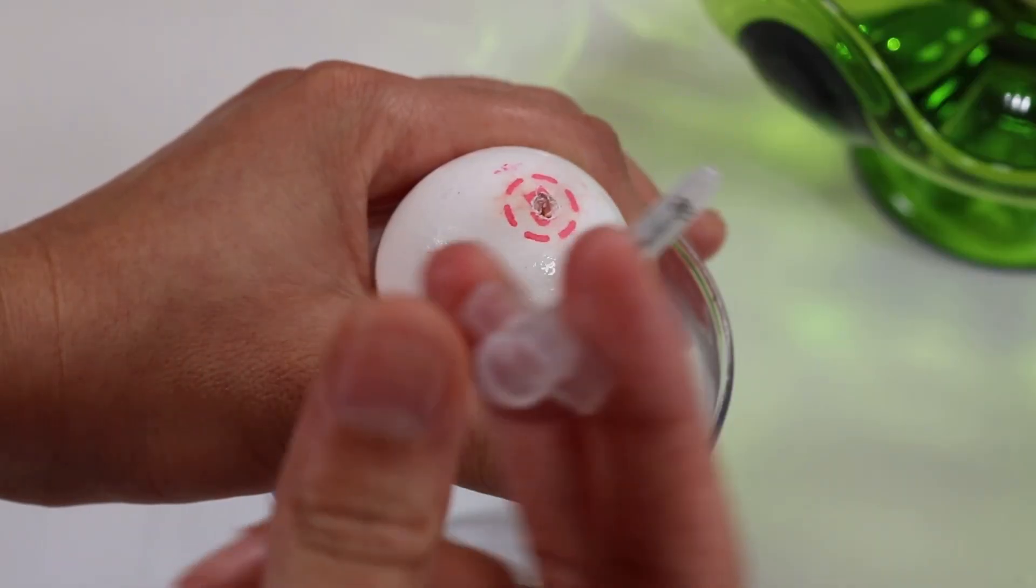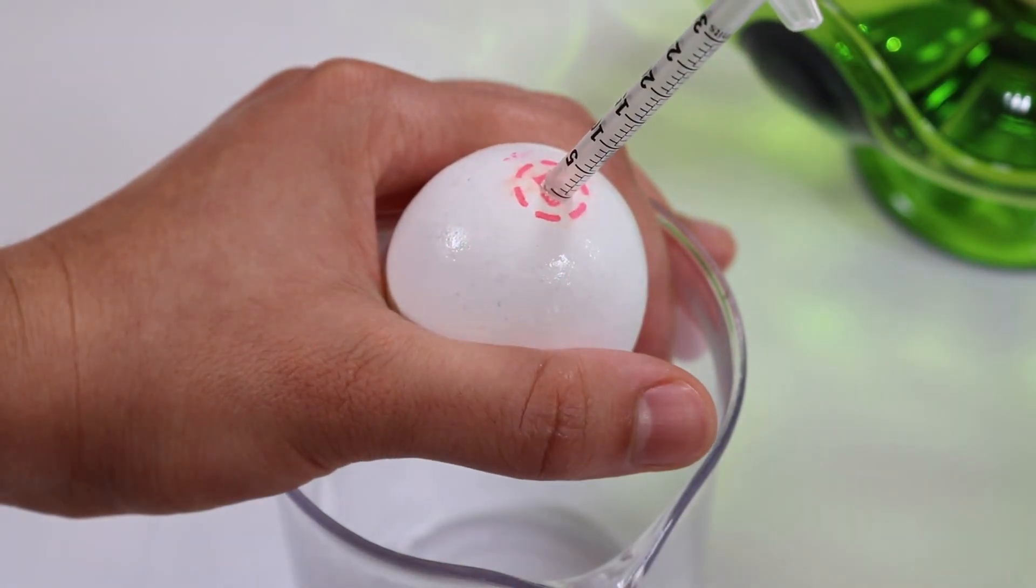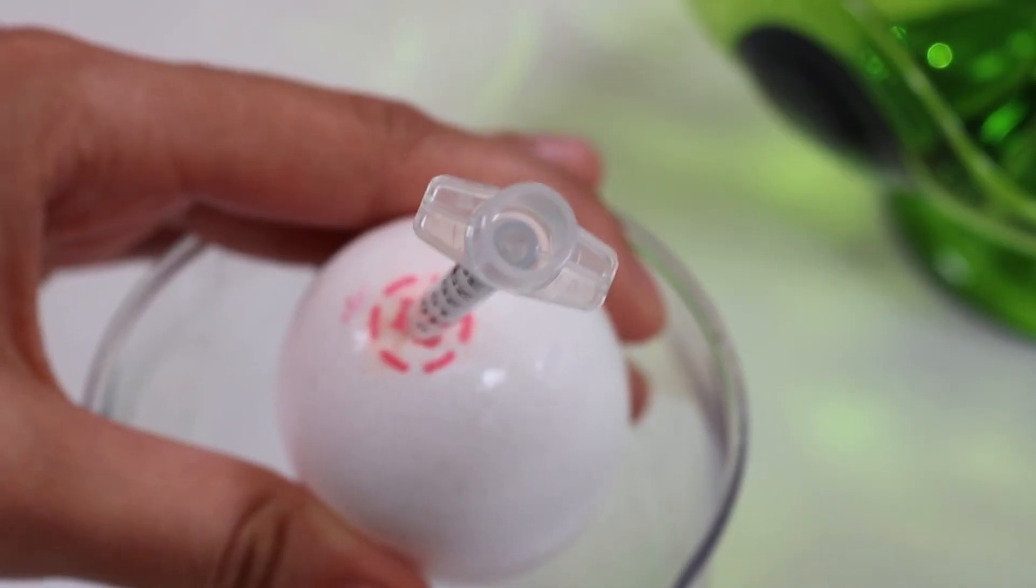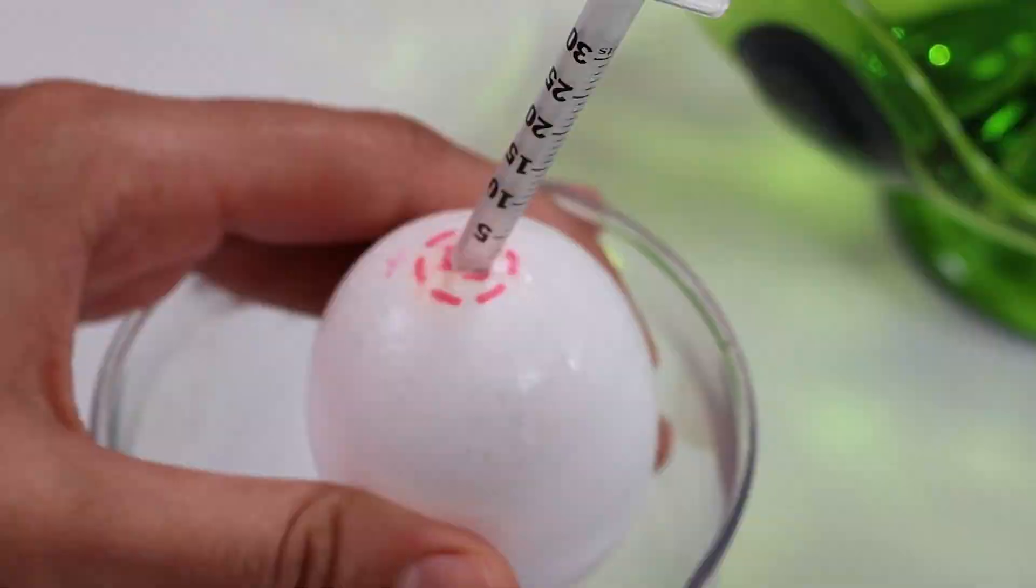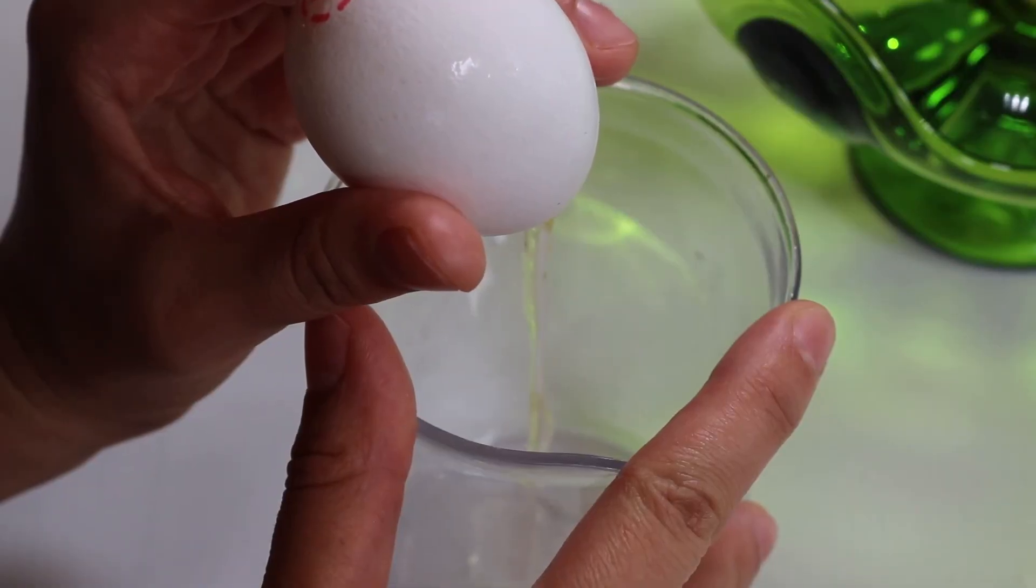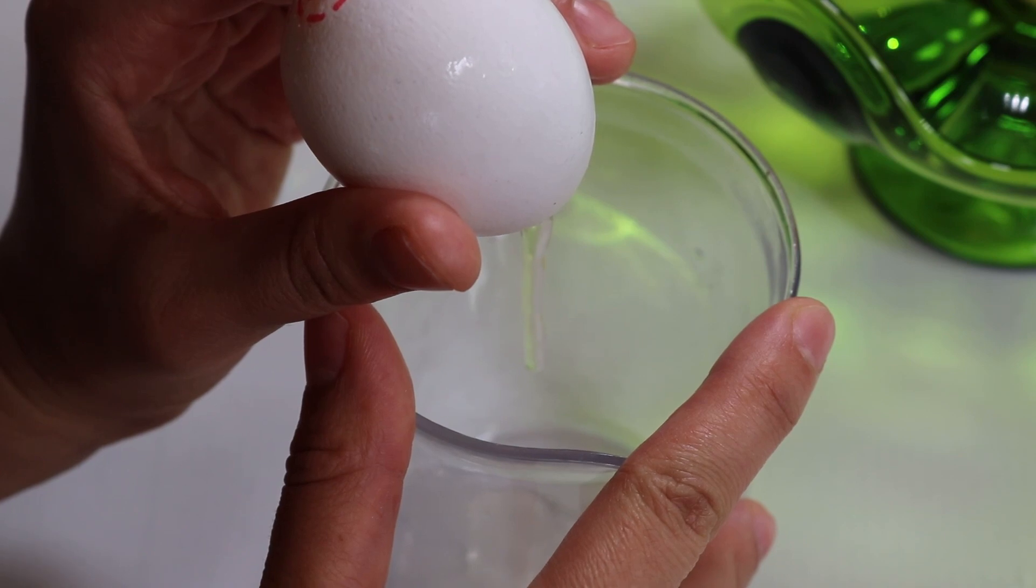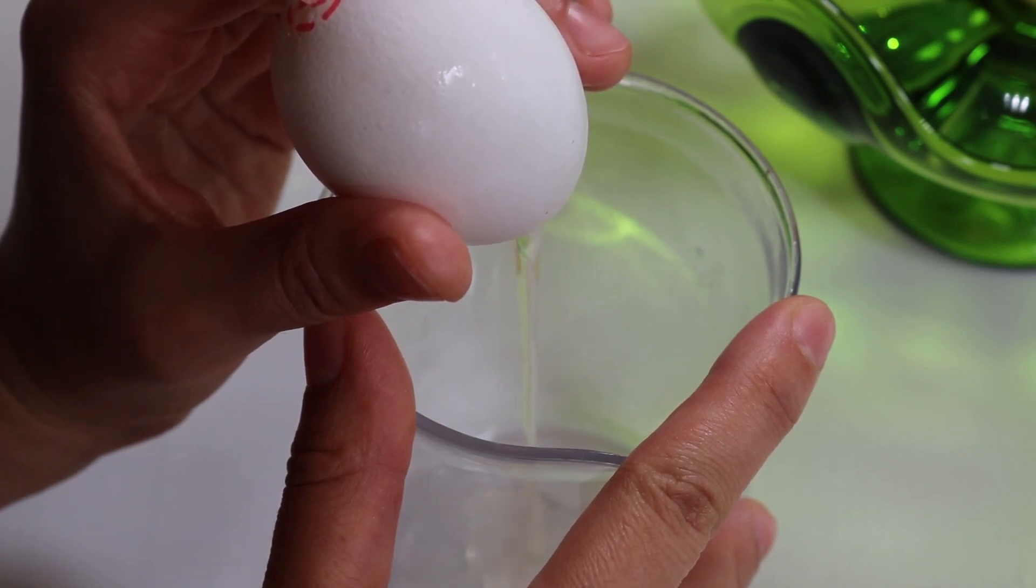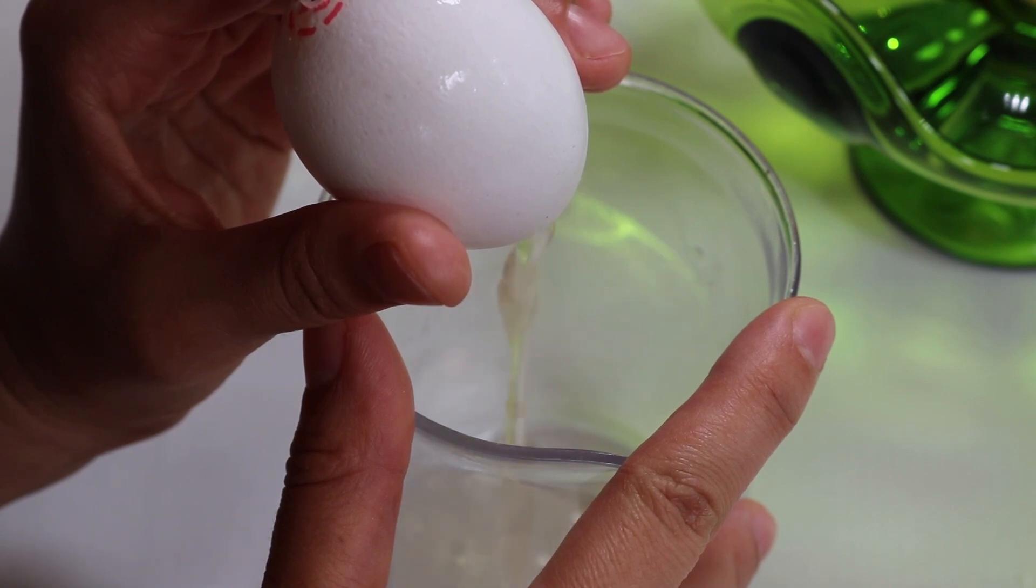So once you have your two holes ready you're going to get whatever device you're using or just your mouth if you're brave and you're going to start blowing air through the top hole of the egg. Once you start blowing air through the egg the guts of the egg should start coming out of the bottom hole which is where it will get trapped in whatever beaker or cup or whatever thing you're using to catch it.